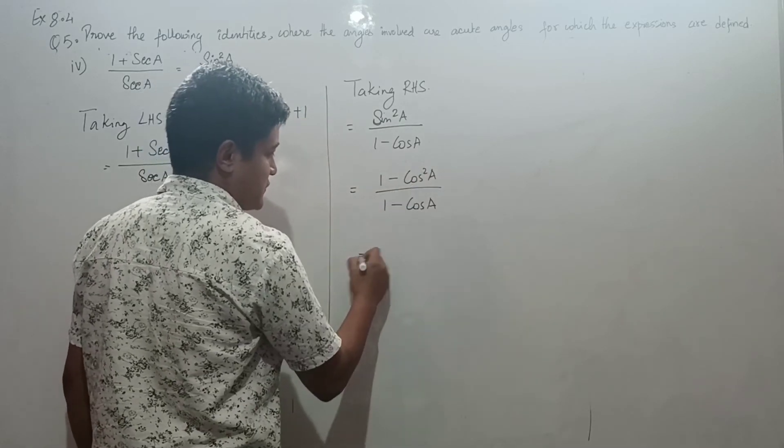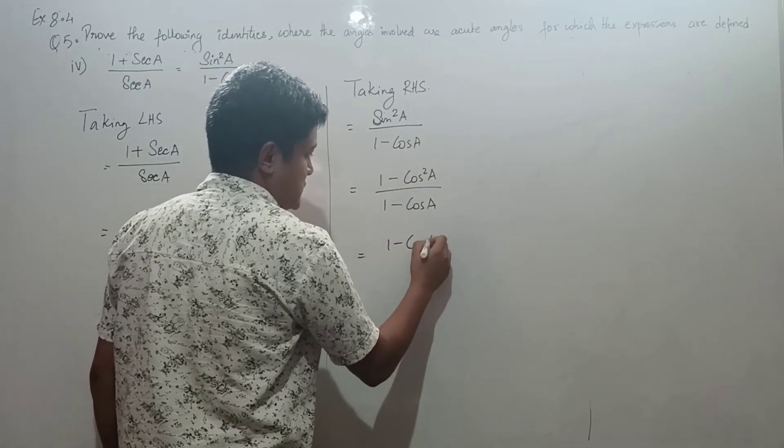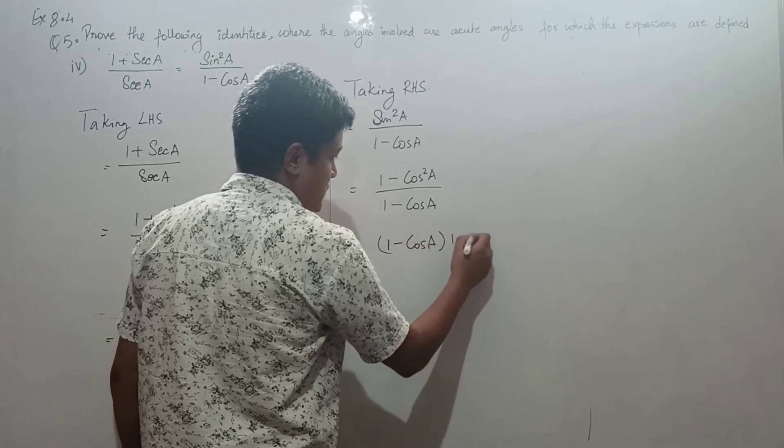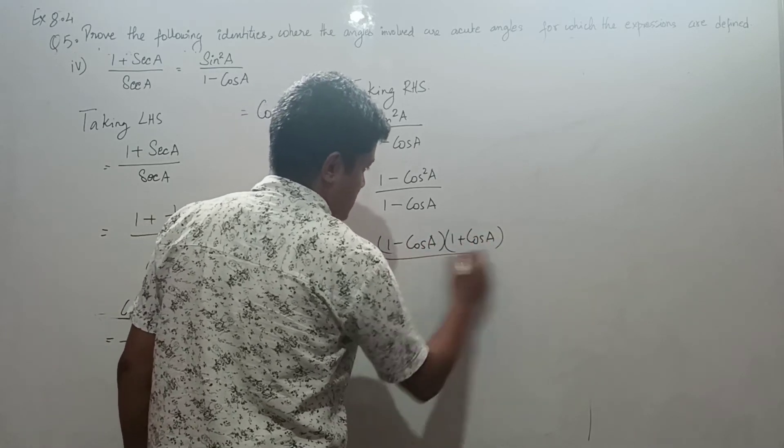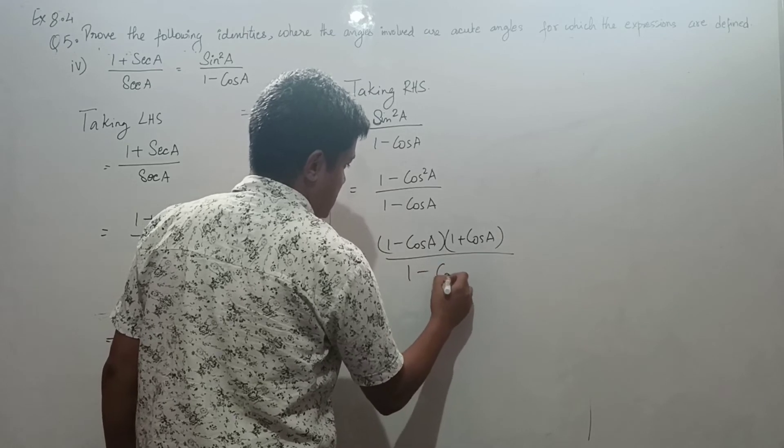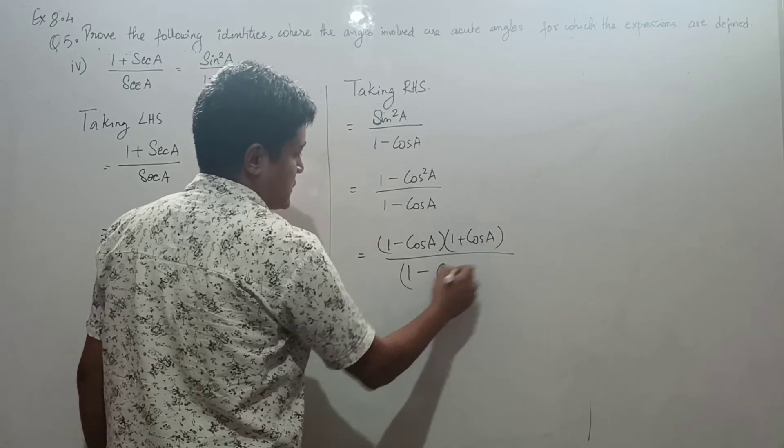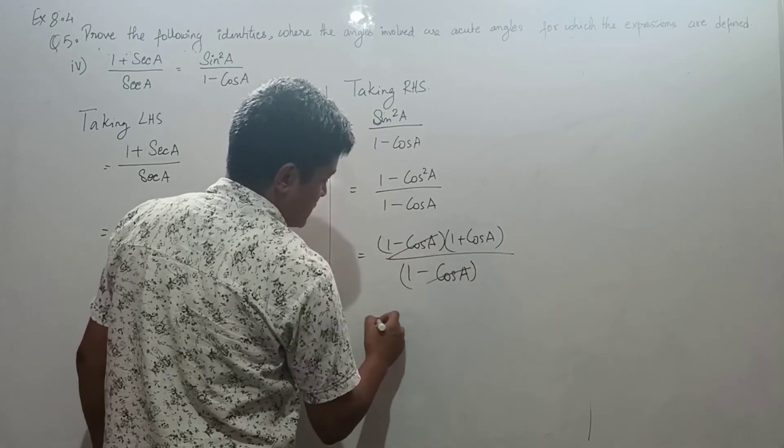Using a squared minus b squared formula: (1 minus cos a)(1 plus cos a) divided by (1 minus cos a). This cancels, and the answer is 1 plus cos a.